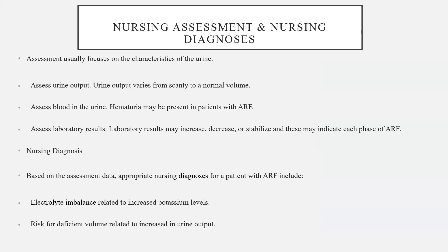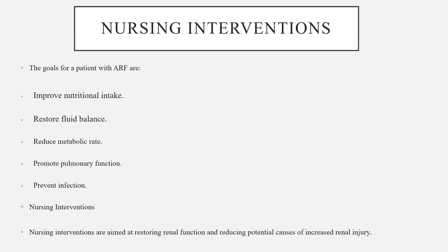The nursing assessment and diagnosis are most important. Assessment focuses on the characteristics of urine, including urine output, which varies from scanty to normal volume, and blood in the urine, as hematuria may be present. Laboratory results may increase, decrease, or stabilize, indicating each phase of ARF. Nursing diagnoses include electrolyte imbalance related to increased potassium levels and risk for deficient fluid volume related to increased urine output. Nursing interventions are aimed at improving nutritional intake, restoring fluid balance, reducing metabolic rate, promoting pulmonary function, preventing infection, and restoring renal function while reducing potential causes of increased renal injury.